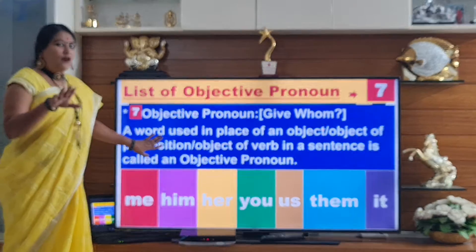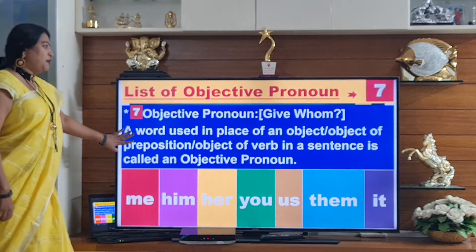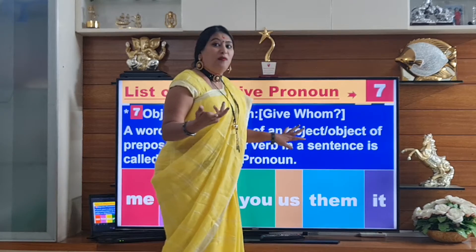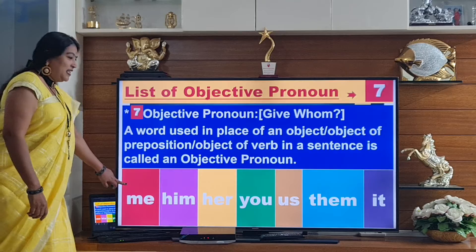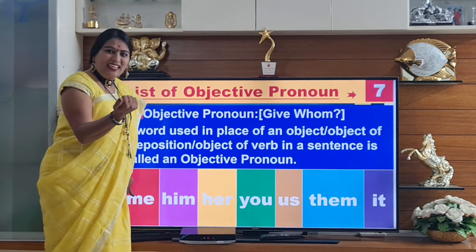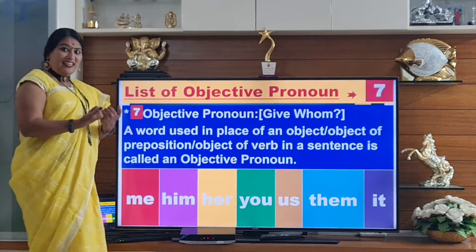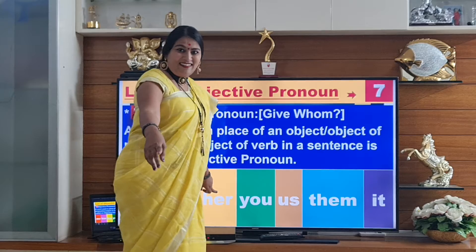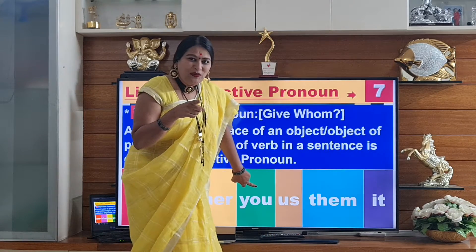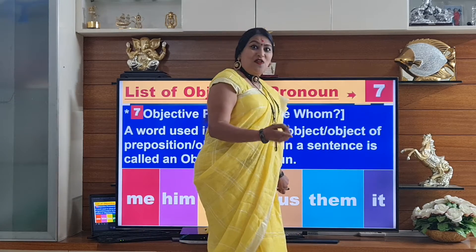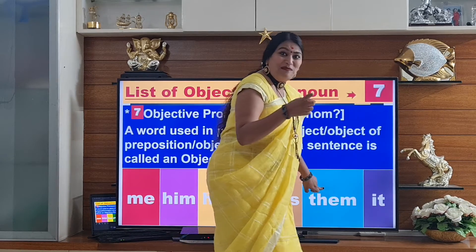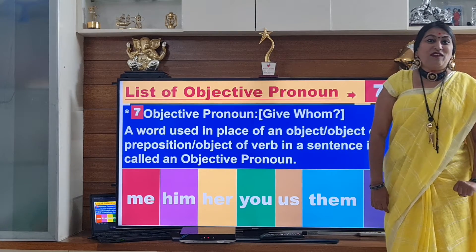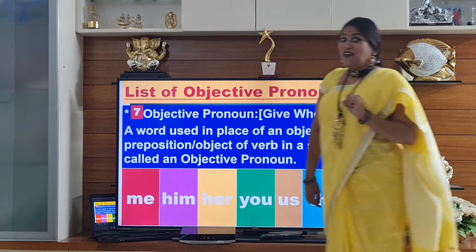I hope subjective pronoun is very clear. Now, objective pronoun — it will talk about whom, not who. Give to whom. For example: 'I want — give it to me.' 'He wants — give it to him.' 'She wants — give it to her.' 'You want — shall I give it to you?' 'We want — give it to us.' 'They want — give it to them.' 'It needs to be taken for the vaccination' — yes, the dog needs a vaccination.